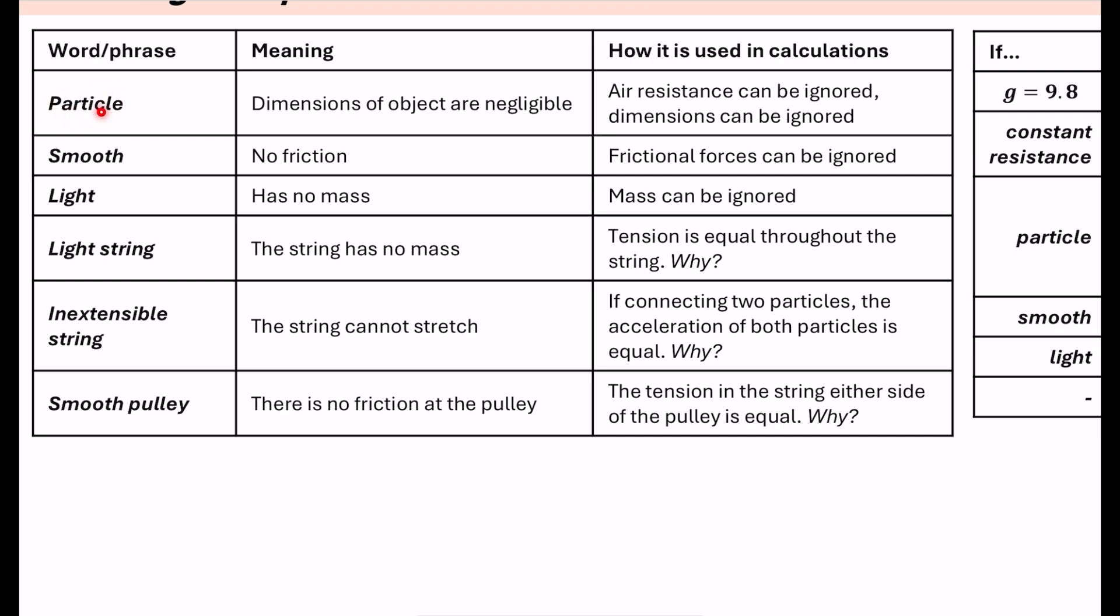We look at the word or the phrase, then we look at its meaning. And then crucially, this is the stuff they like to ask about more often, more often than just what it means. So for example, if the question says that the body or the ball or the stone can be modeled as a particle, it means that the dimensions of the object are negligible. Negligible means that it's so small that it can be ignored.